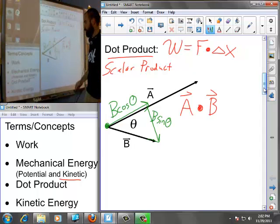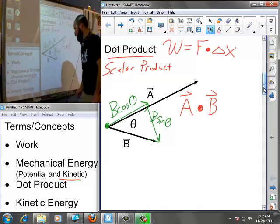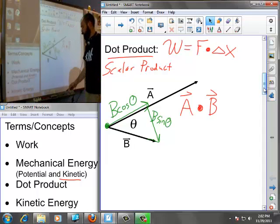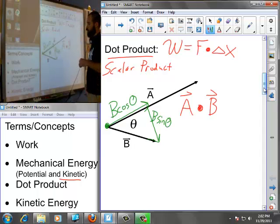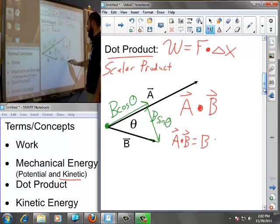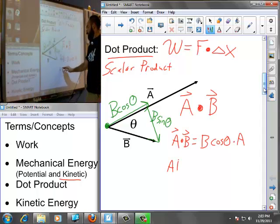If I was to say what is the dot product of A with respect to B, the dot product in this case would be the parallel portion of B multiplied by A, which would be B cos theta multiplied by A, or more simply, A B cos theta.